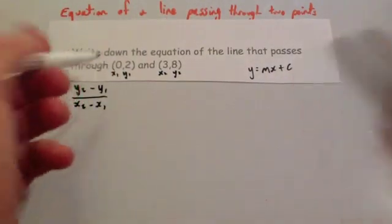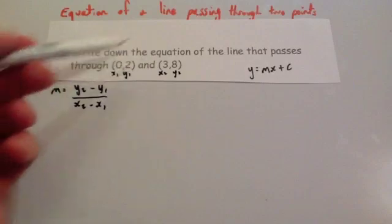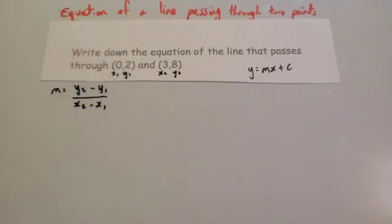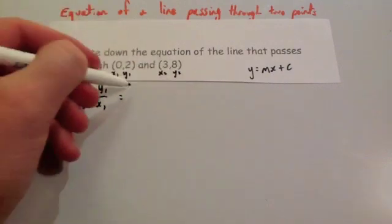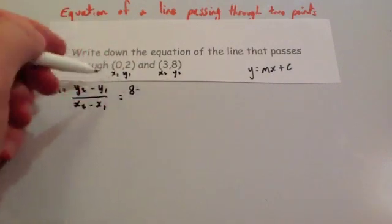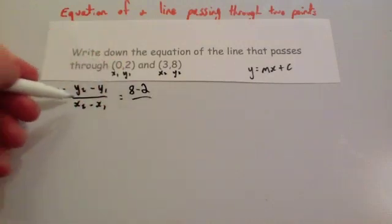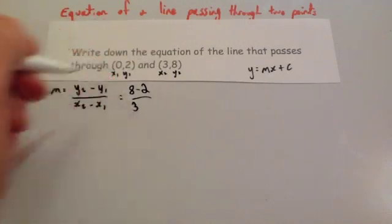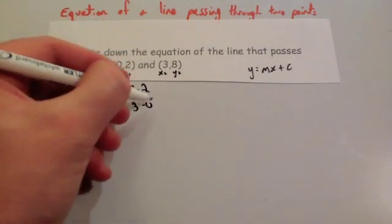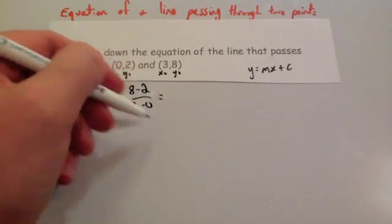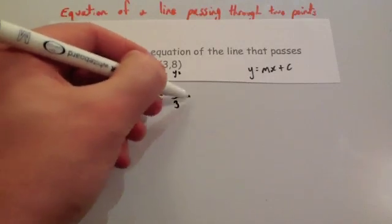It doesn't really matter which way around you do these, but I tend to like doing that because then it gives me rise over run. So let's put them in. So y2 is 8, subtract y1, which is 2, divided by x2, which is 3, minus x1, which is 0. So that gives us 6 divided by 3, which is equal to 2.